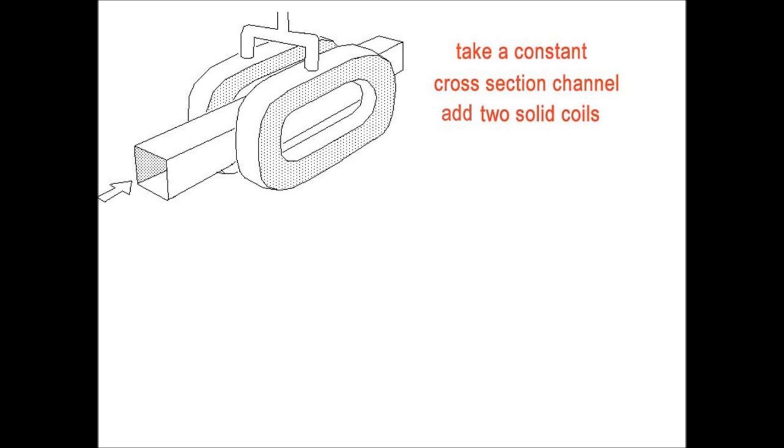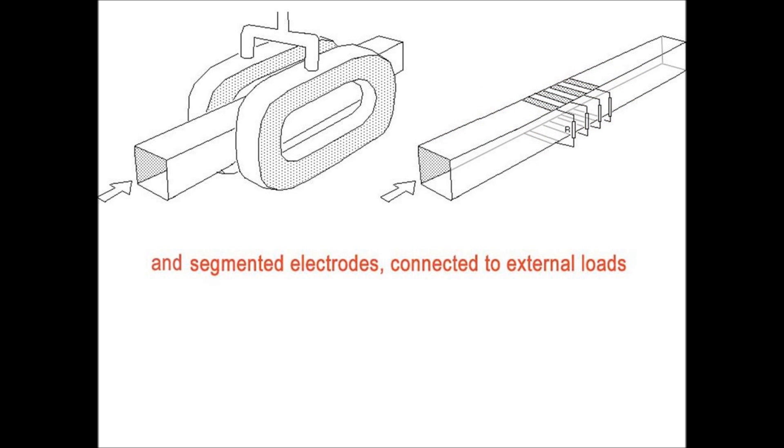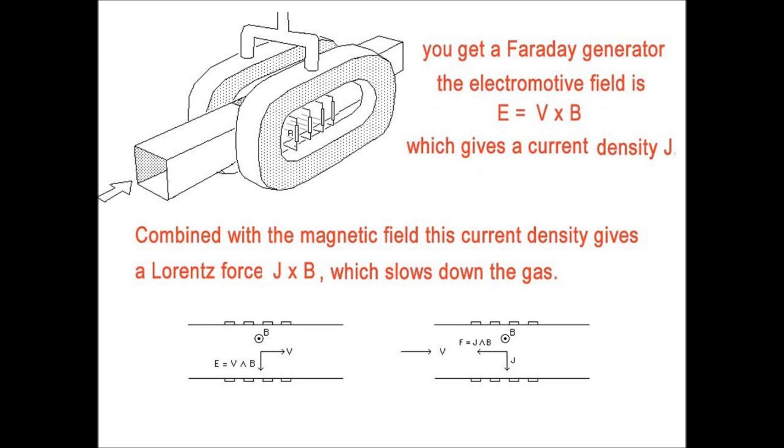The Faraday converter is made of two components. On the channel, you can see the two coils. And you had segmented electrode converter. Here, the electrode pairs are connected to loads. And here, the electrodes are in place.